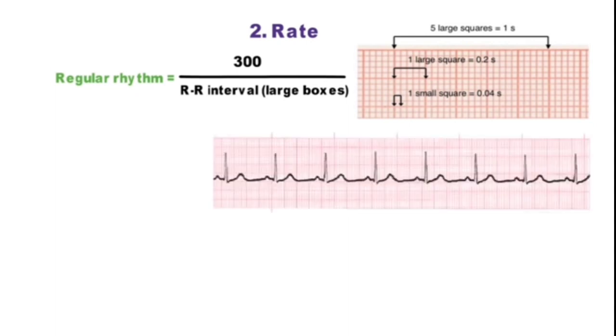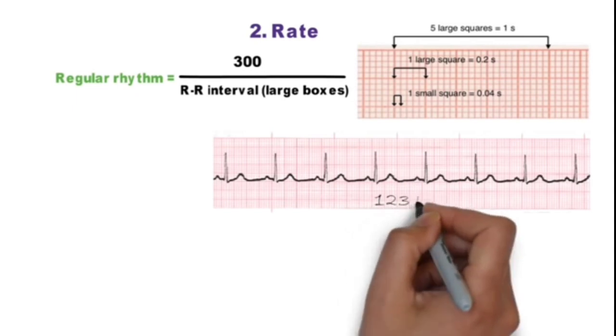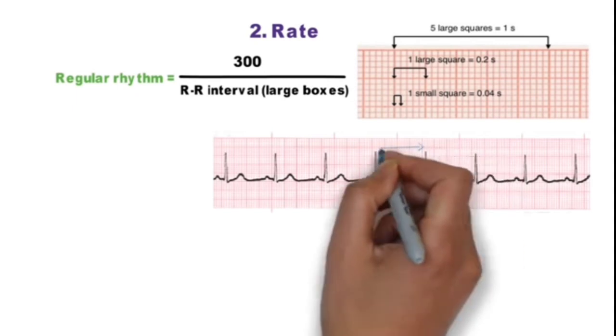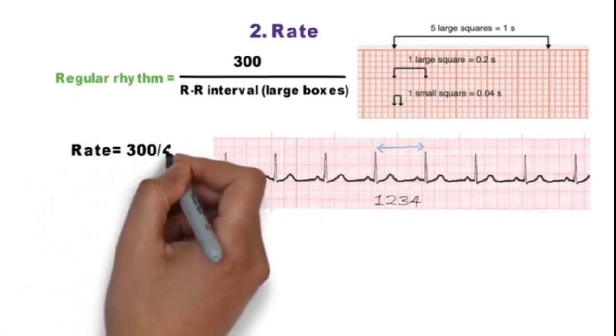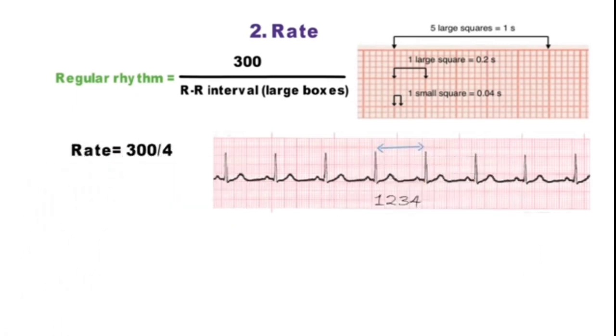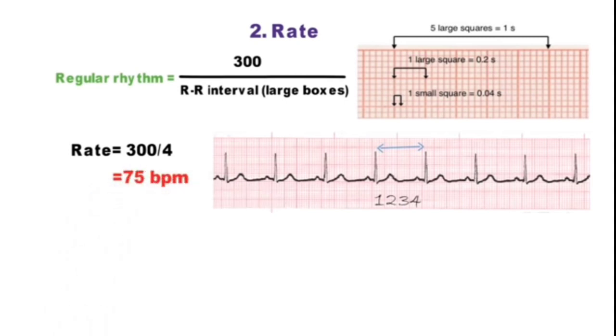This is a normal sinus rhythm ECG. There are 4 large boxes between RR interval, so if we divide 300 by 4, heart rate will come 75 beats per minute.